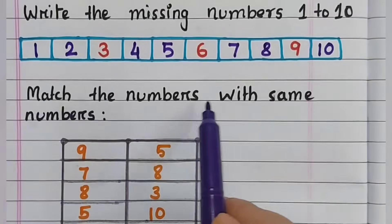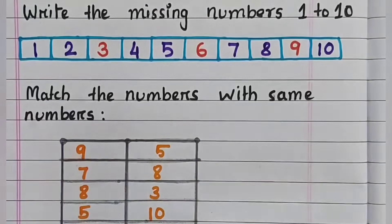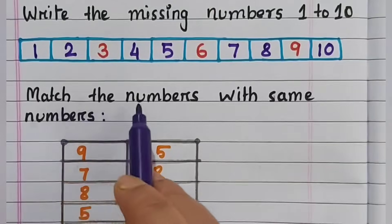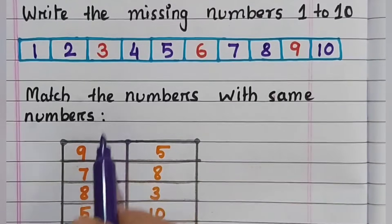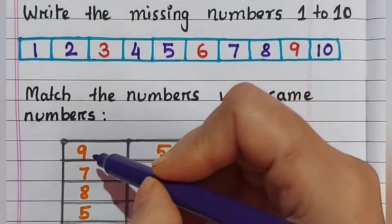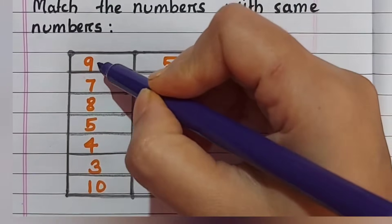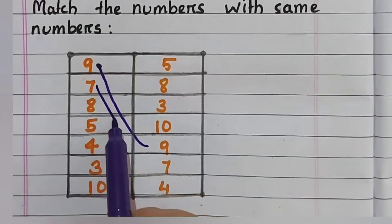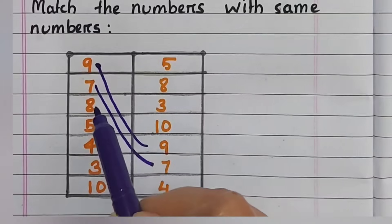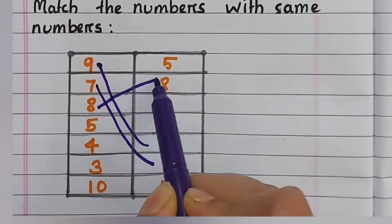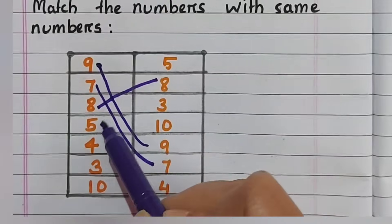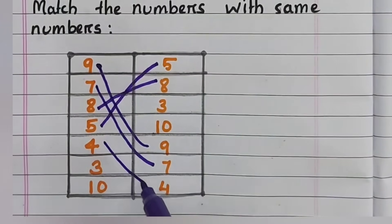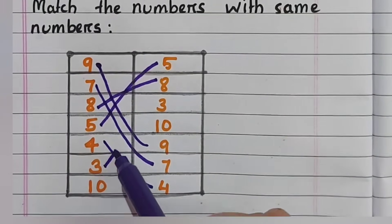Next, match the number with the same number. For nursery kids, this type of question is commonly asked. Nine and nine are the same, seven and seven are the same, eight and eight, five and five, four and four, three and three.